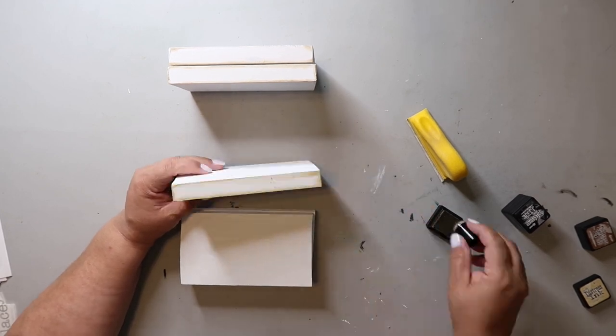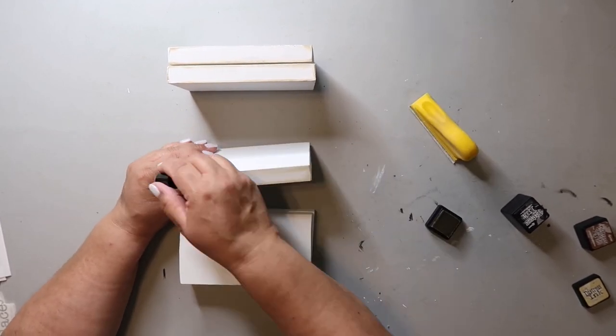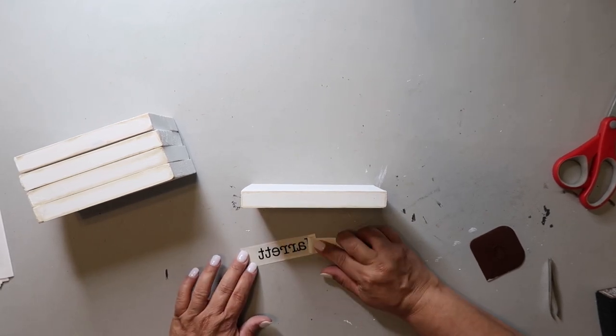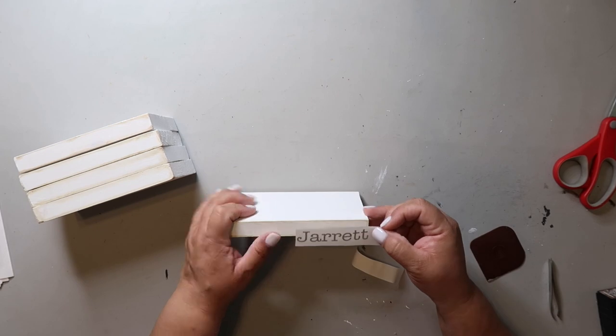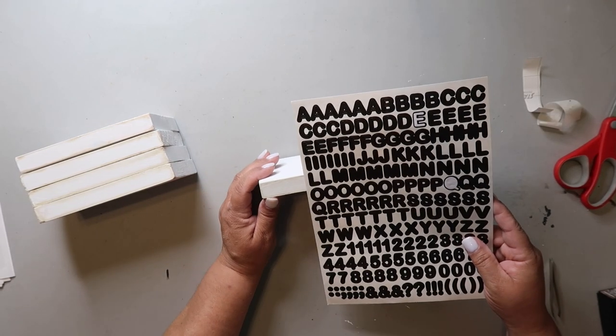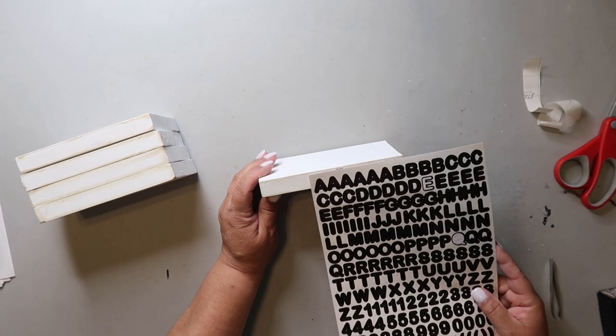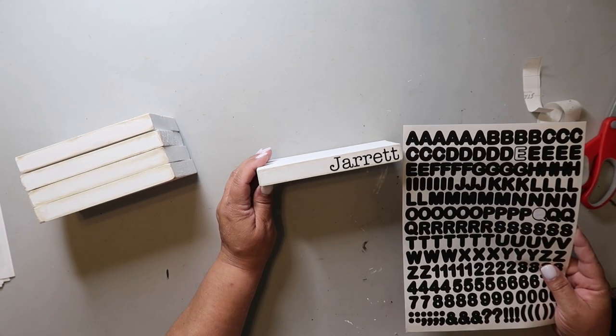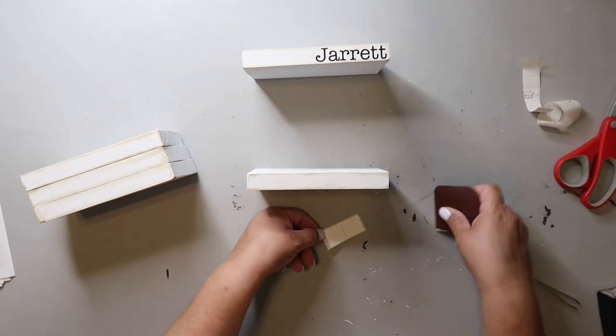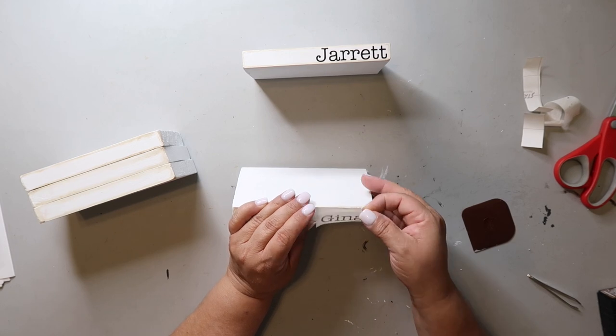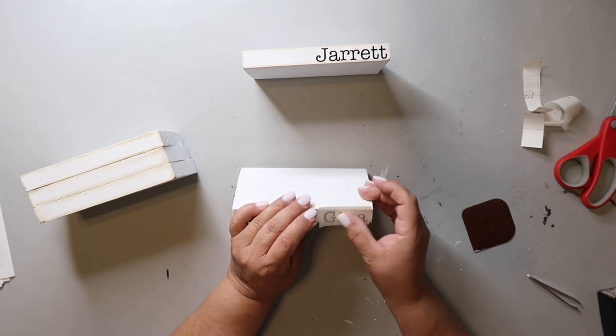I'm going to be applying decals to each book that I cut out using my Cricut. I just wanted to show you that you can also use stickers to add the words or names to the books. You could also freehand them or even use stamps to apply it. I was originally going to use stamps but the ones that I have are smaller and I was wanting the letters to be a little bit larger, so that's why I used my Cricut.